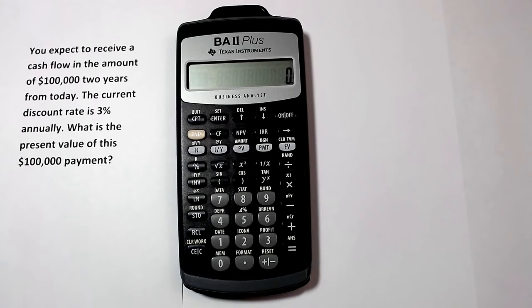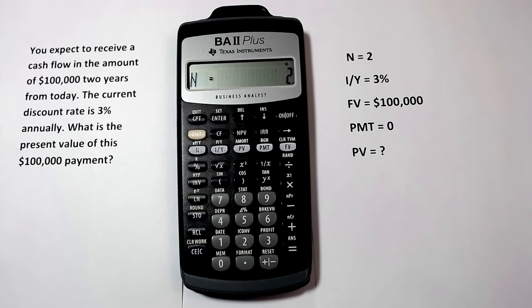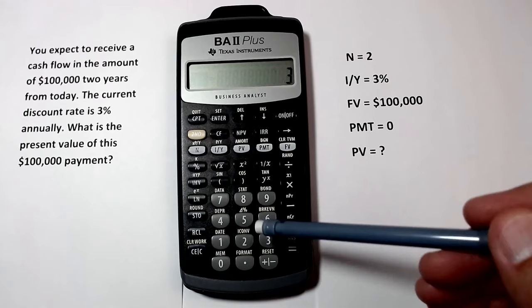As we did in the first problem, we'll first enter the number of compounding periods. The compounding convention here is annual and the term is two years. So the number of compounding periods is two. We type two, then N. The interest rate is 3%. We enter three, then I/Y.